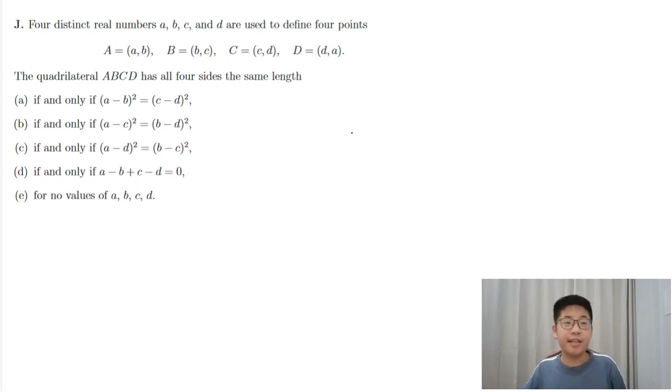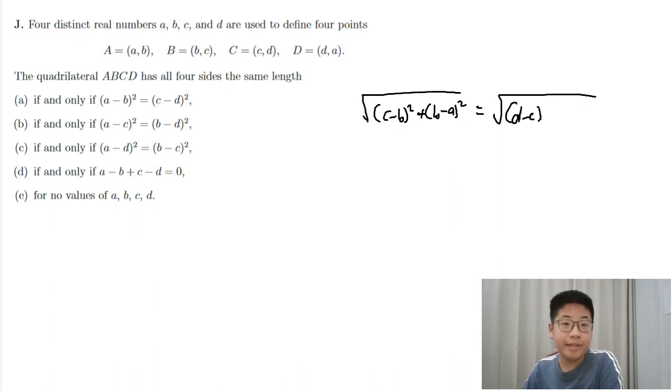The quadrilateral has all four sides the same length if and only if one of the following expressions. So mod AB equals mod BC. This means that C minus B squared plus B minus A squared, using the Euclidean distance formula, equals the square root of D minus C squared plus C minus B squared, which means that B minus A squared equals D minus C squared.